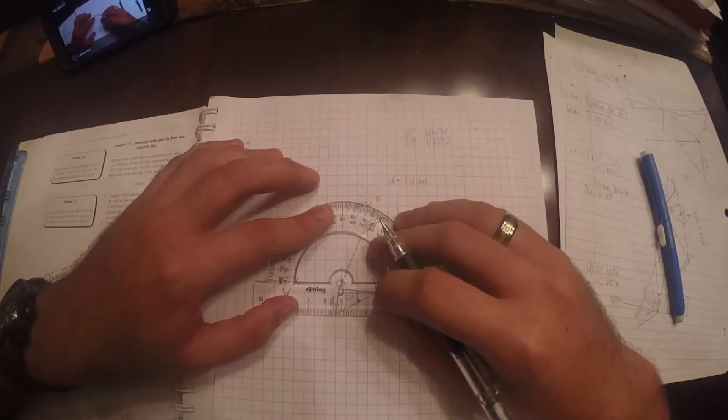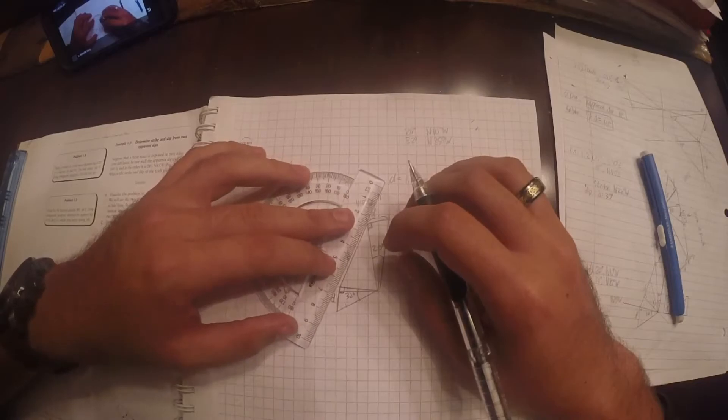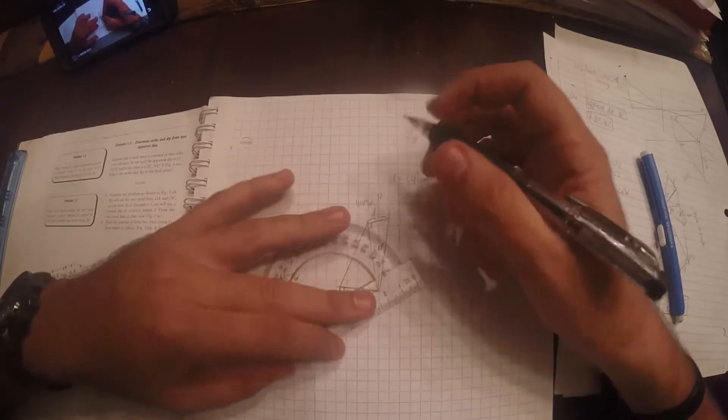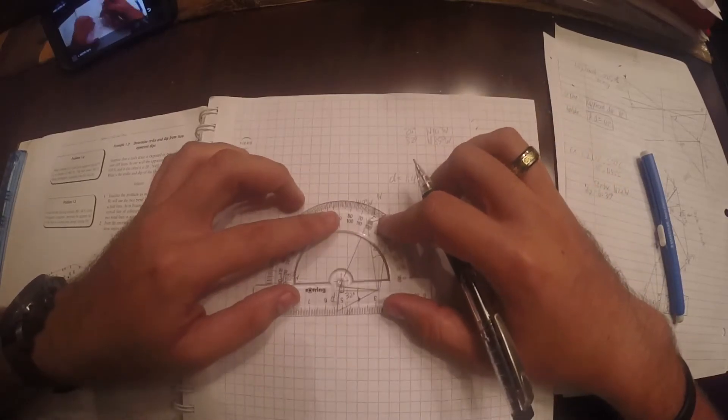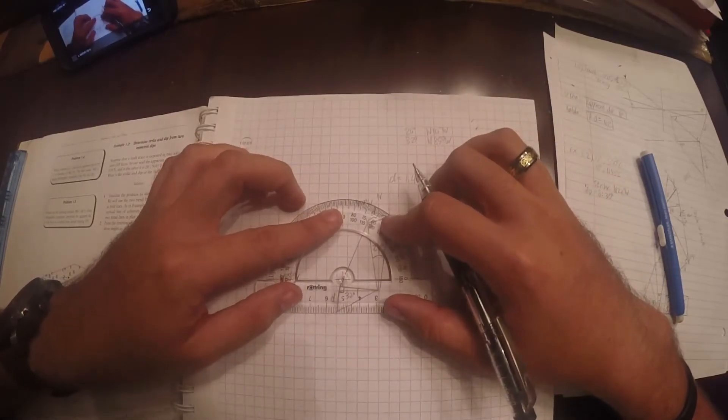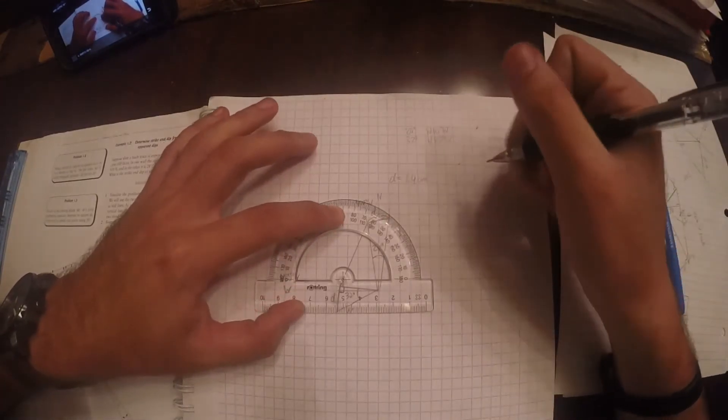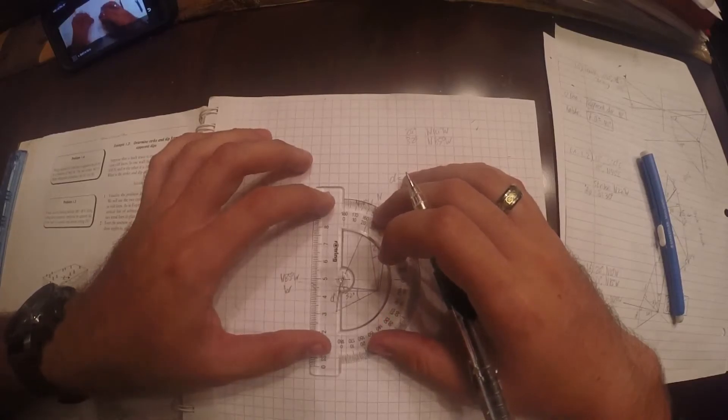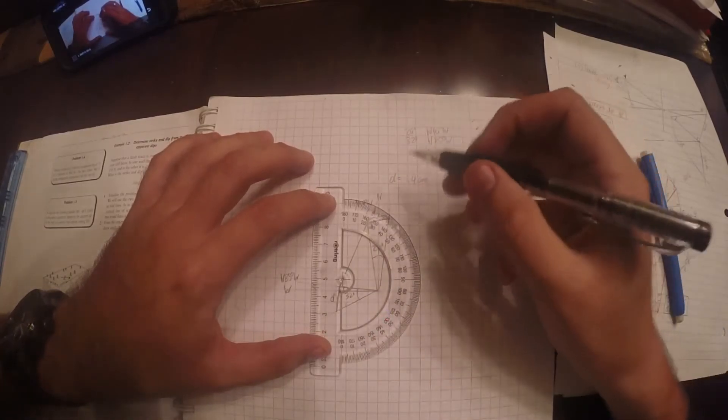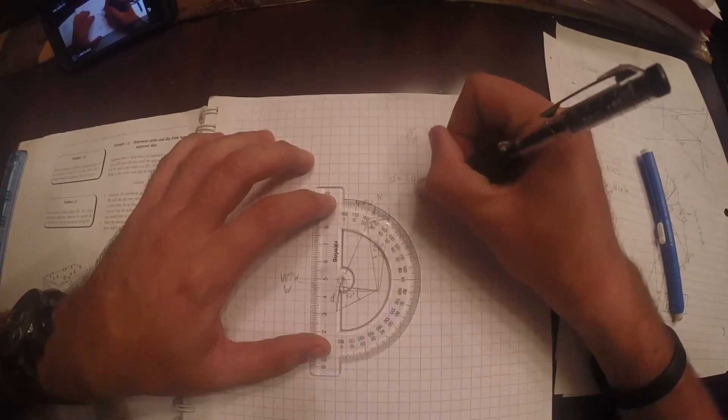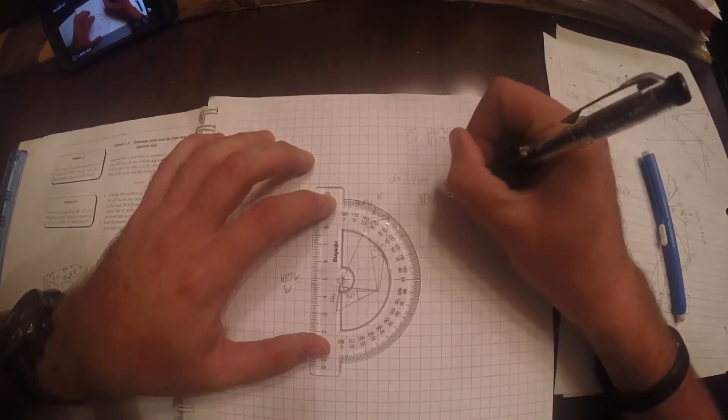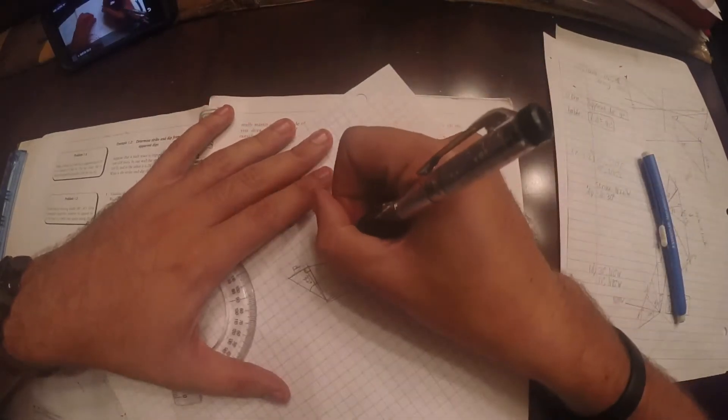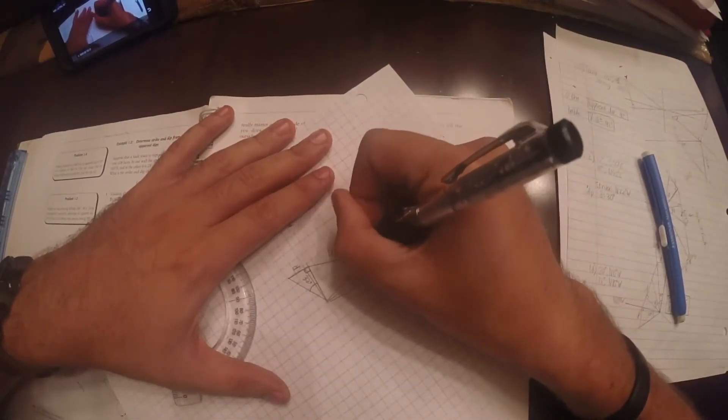So measure that. I need to extend it so I can see where it goes to. Lightly up there. Okay, so if I'm looking at this, I've got 75 degrees. So that's, oh wait, nope. Do that way too frequently. I have north 24 degrees east. So that is north 24 degrees east.